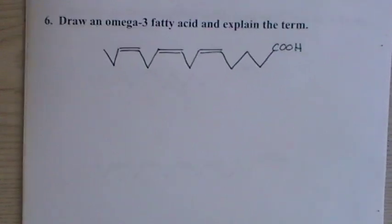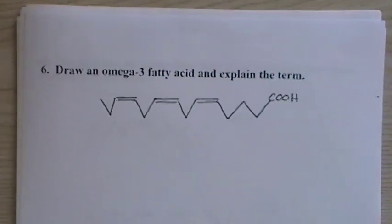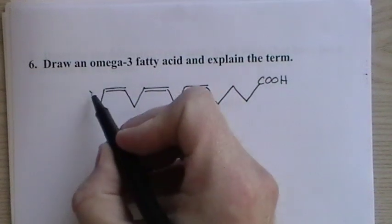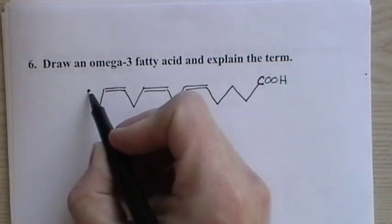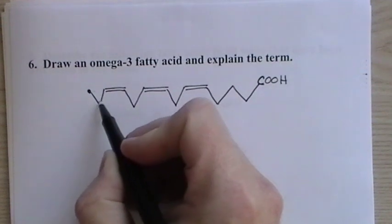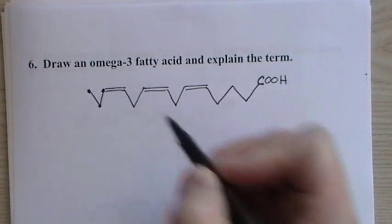Now draw an omega-3 fatty acid. With the omega-3, we're talking about from the end—not the carboxyl end, but from the tail end. One, two, three—that's where we meet up with the first double bond. So that's omega-3 fatty acid, very common and considered a healthy type of fatty acid.